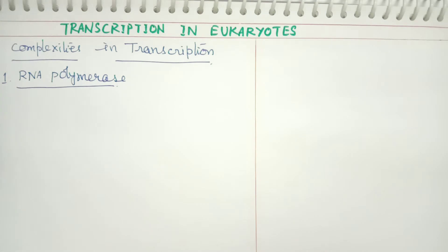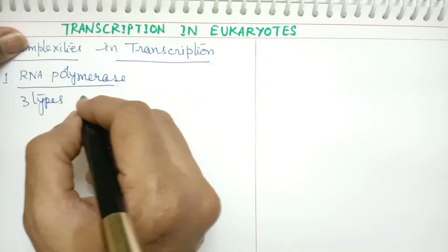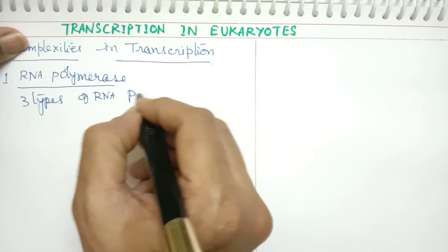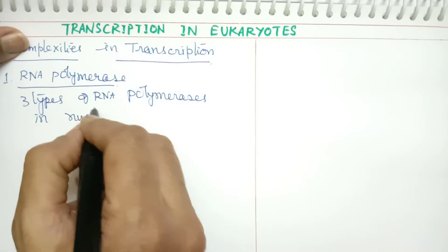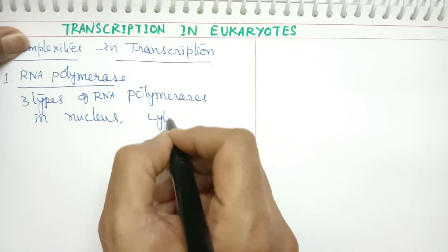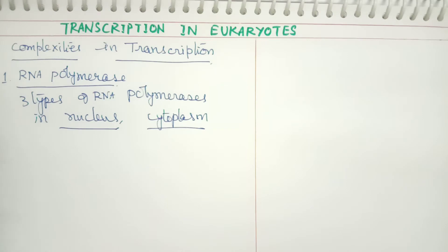In prokaryotes, RNA polymerase is of only one type and it can catalyze the synthesis of all three types of RNA: mRNA, rRNA, and tRNA. But in eukaryotes, there is no single RNA polymerase that catalyzes all three types. There are three types of RNA polymerases present in the nucleus as well as in the cytoplasm.